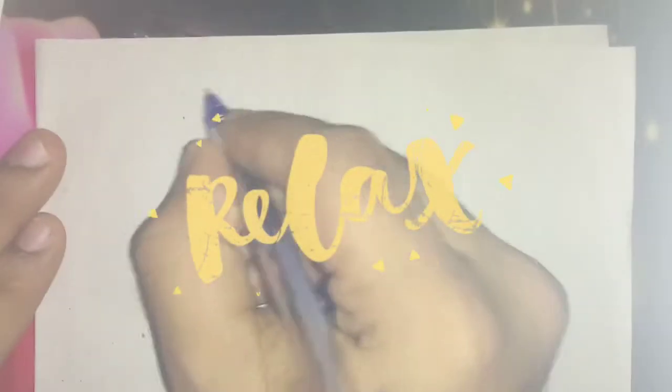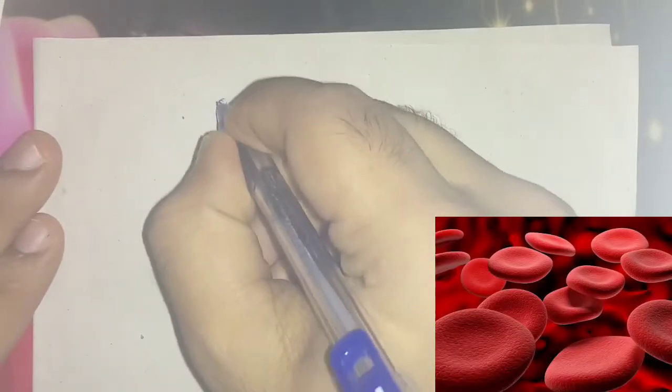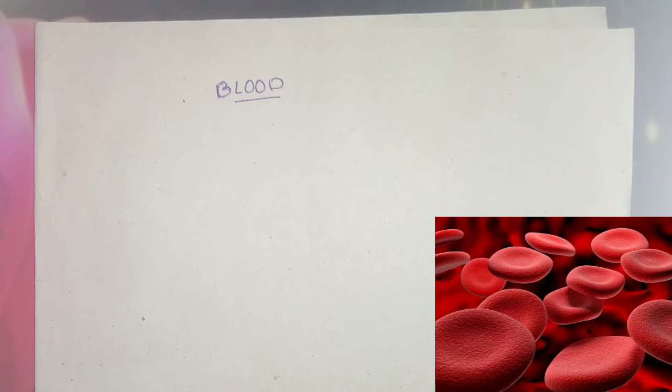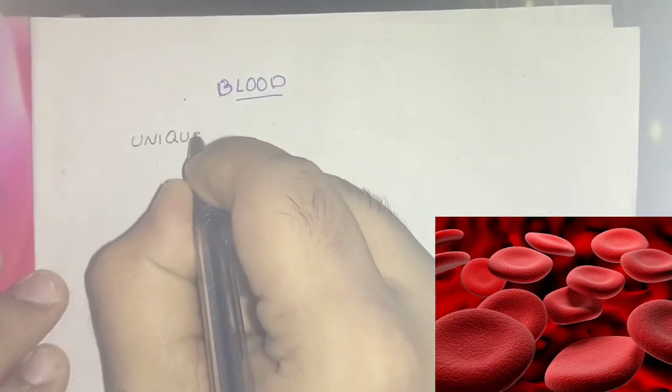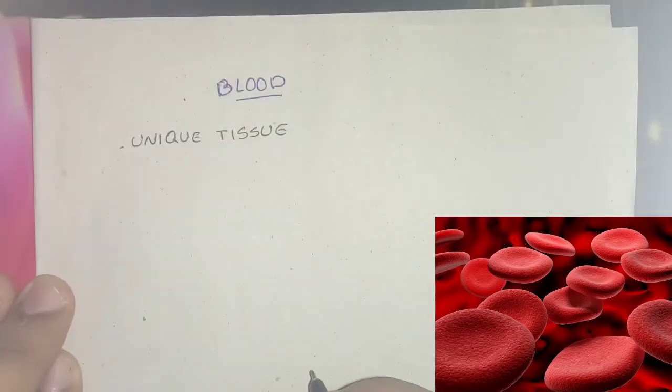Hello guys, welcome back to YouTube channel PD Bros. This is me Debra on the topic blood. Blood is a unique tissue because it is a fluid. It is a suspension of cells in the plasma with dissolved protein.